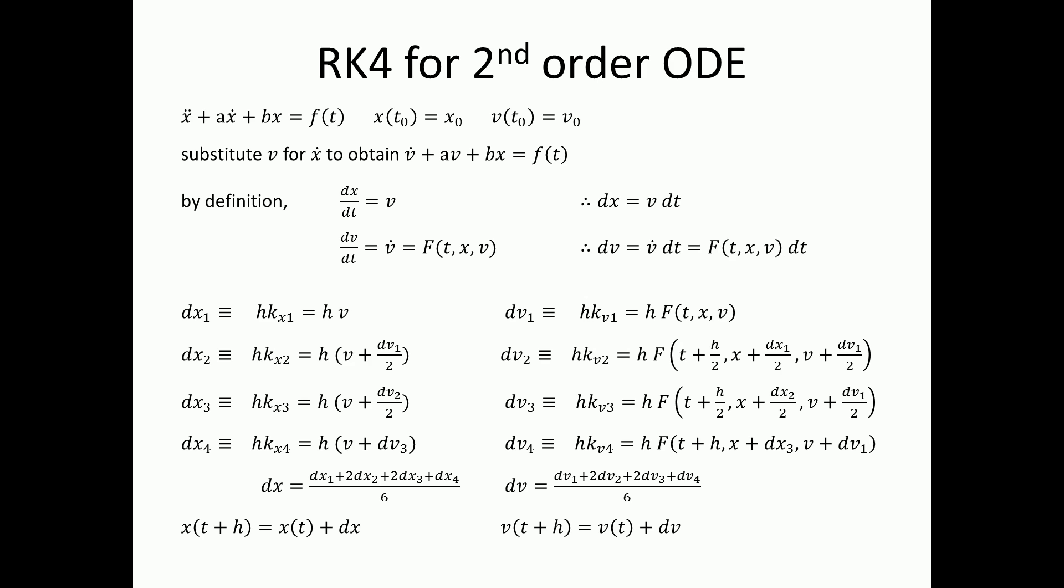To solve a second order differential equation with the Runge-Kutta fourth order method, you substitute an intermediary term, in this case v, for x dot, and then the equation, the one I'm using, changes to v dot plus av plus bx equals f of t. Now you can split the second order differential equation into two first order equations.